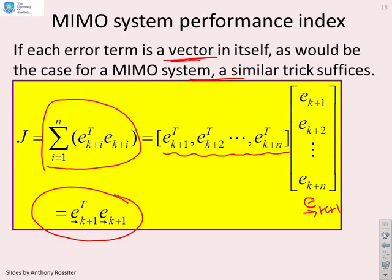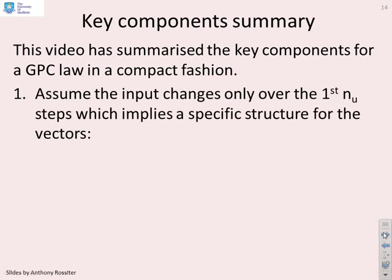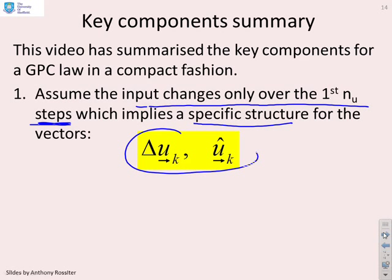So, key components. The video has summarized the key components for GPC in a compact fashion. First, we're going to assume that the input changes only over the first NU steps. And what that does is it gives you a specific structure for the prediction vectors, and in particular, a particular structure for these two vectors here. And these, remember, are your degrees of freedom. So, we're giving a very specific structure to our degrees of freedom.